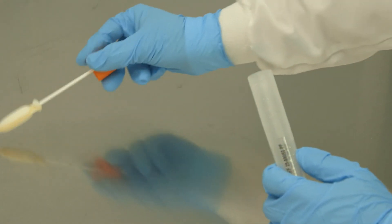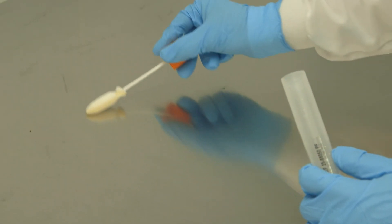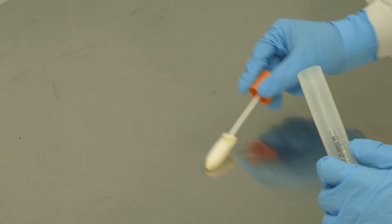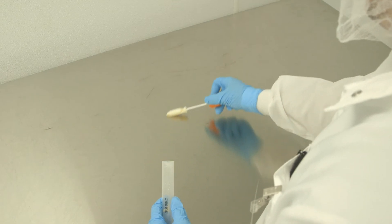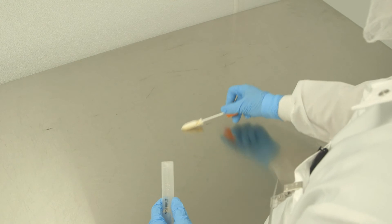Swab diagonally using the same swab surface side as used in the vertical swabbing. Swab approximately 10 times in the sampling area until the opposite side's bottom corner has been sampled.